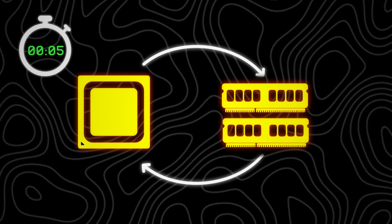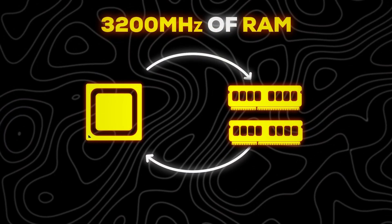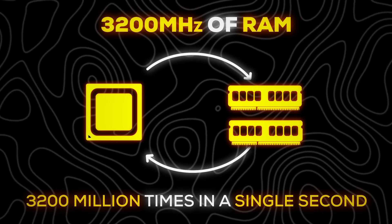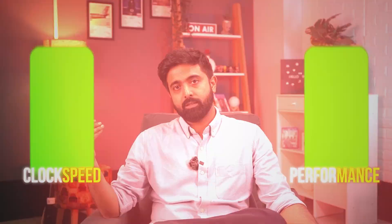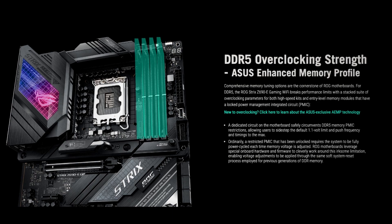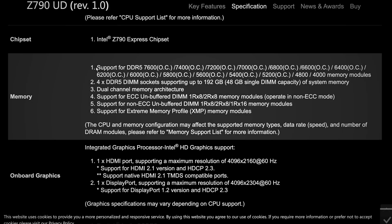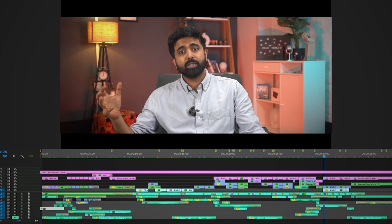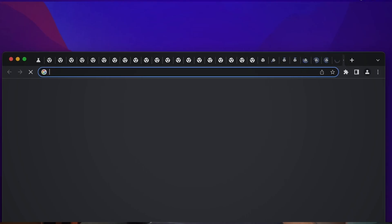Next up is RAM clock speed. This tells you how many times your data goes from RAM to CPU in a single second. A single back and forth is called a clock cycle, and the clock speed is measured in megahertz. So a 3200 MHz RAM means it can send and receive data 3200 million times per second — basically, the higher the clock speed, the higher the performance. Make sure you check the maximum clock speed your motherboard supports before buying. With higher RAM speeds, you can scroll through bigger timelines smoothly, handle large datasets in machine learning, and switch faster between multiple applications.